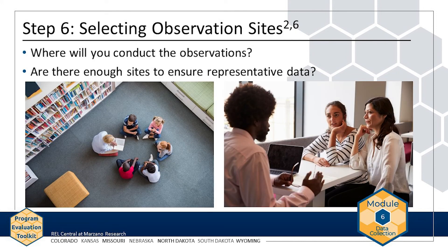The next step is selecting where you will conduct observations. It is important to select enough observation sites so that the data are representative of the target population. This step is related to sampling, which you can review in Module 4. For example, the AMP evaluation team wants to answer the question: How many students attended AMP each month? This could involve recreational activities, field trips, tutoring, or math extension activities. So the evaluation team would need to observe all AMP activities to answer this question through observations.